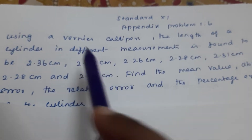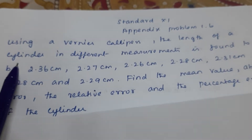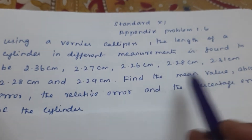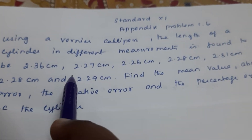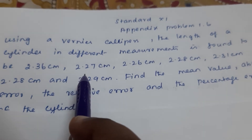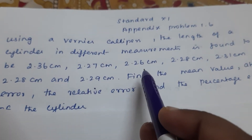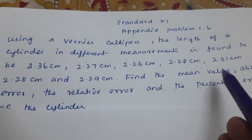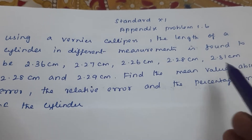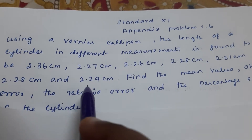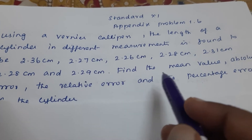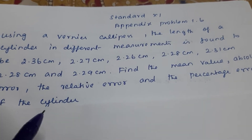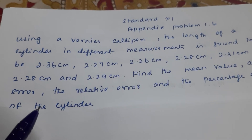Standard 11 Appendix 1.6: Using a Vernier Caliper, the length of a cylinder is measured seven times, giving readings of 2.36 cm, 2.27 cm, 2.26 cm, 2.28 cm, 2.31 cm, 2.28 cm, and 2.29 cm. Find the mean value, absolute error, relative error, and percentage error of the cylinder.